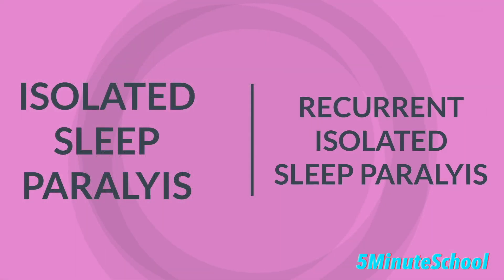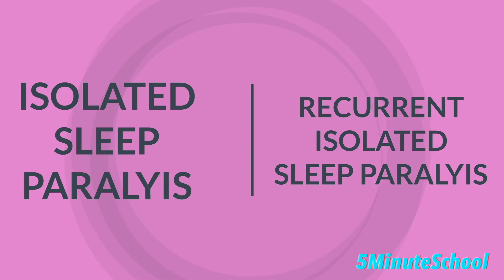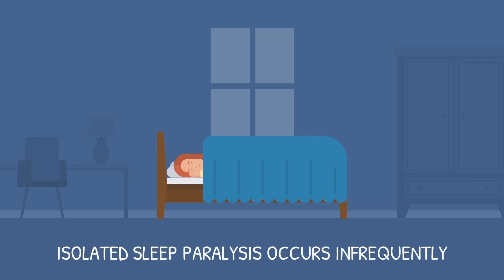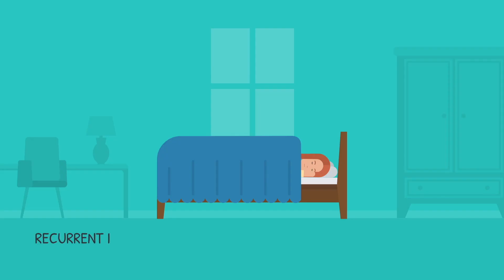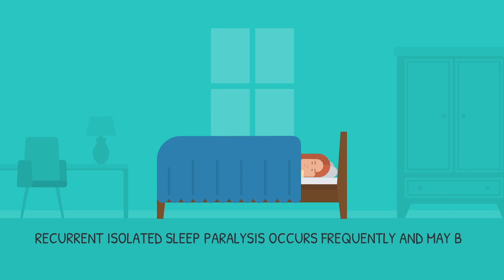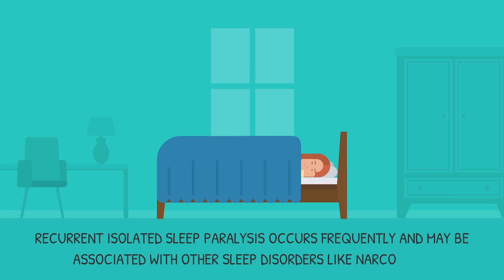Sleep paralysis can be classified into two types: isolated sleep paralysis and recurrent isolated sleep paralysis. Isolated sleep paralysis occurs infrequently, while recurrent isolated sleep paralysis occurs frequently and can be associated with other sleep disorders such as narcolepsy.